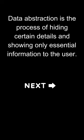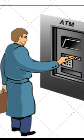Data abstraction is the process of hiding certain details and showing only essential information to the user. For example, an ATM machine can be used for cash transfer, withdrawal, inquiring account balance, etc. We utilize ATM machines to achieve different functionalities.